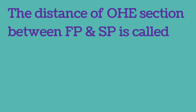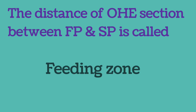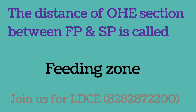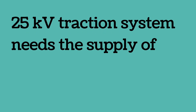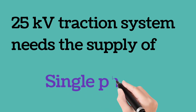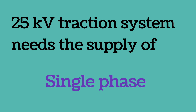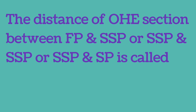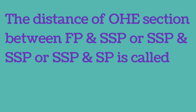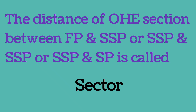The distance of OHE section between FP and SP is called a feeding zone. The 25 kV traction system needs the supply of single phase. The distance of OHE section between FP and SSP, or SSP and SSP, or SSP and SP is called a sector.